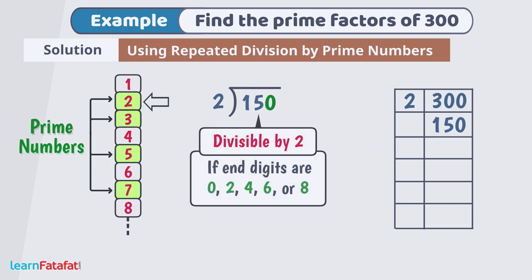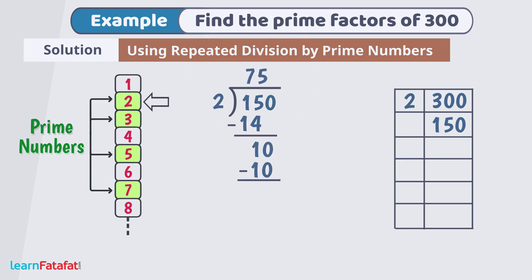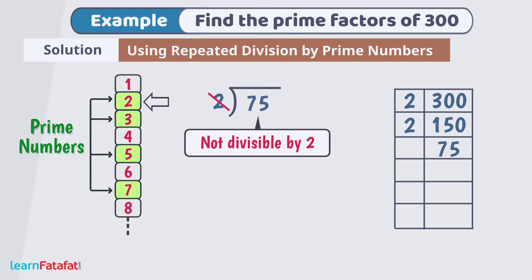On division, it produces quotient 75. Write 2 here and 75 here. 75 is not divisible by 2 as number does not have last digit from 0, 2, 4, 6 or 8.